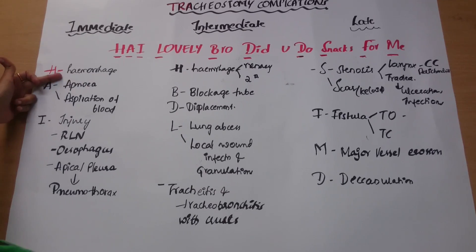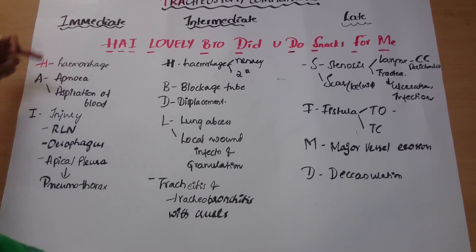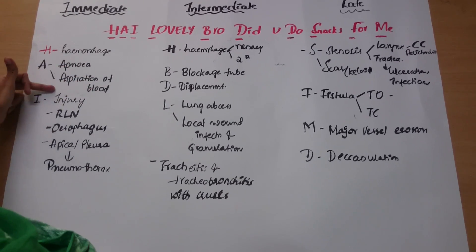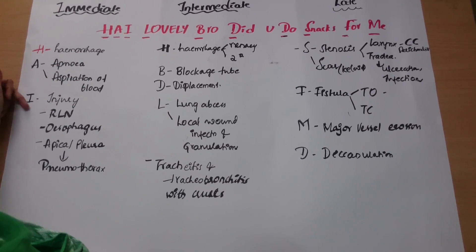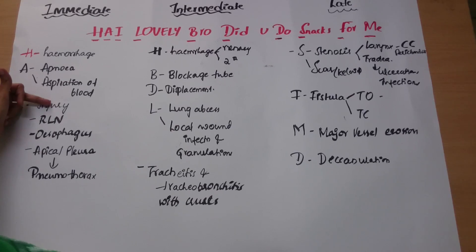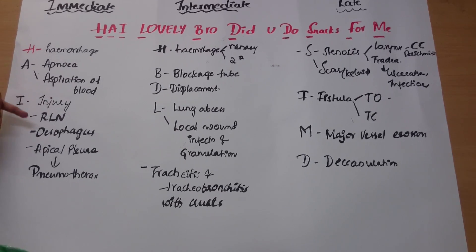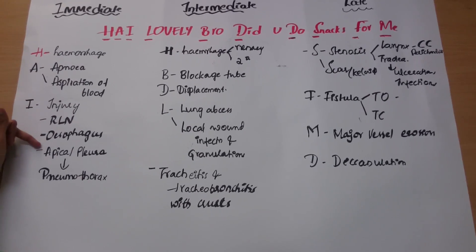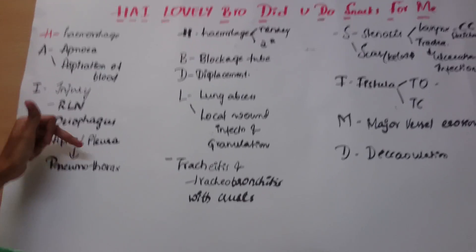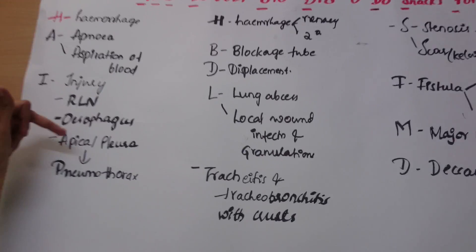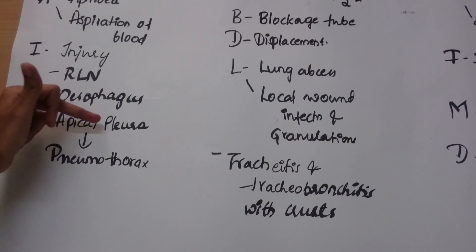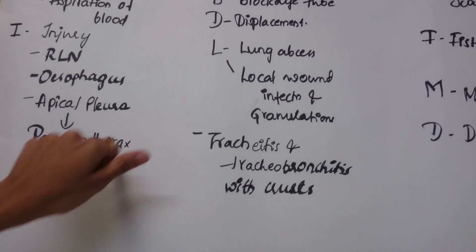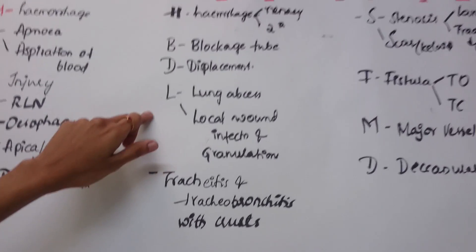H for hemorrhage, A for apnea and aspiration of the blood, I for injury during the surgery to the recurrent laryngeal nerve, esophagus, and apical pleura of the right lung, which causes pneumothorax.